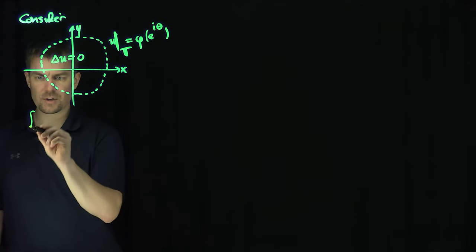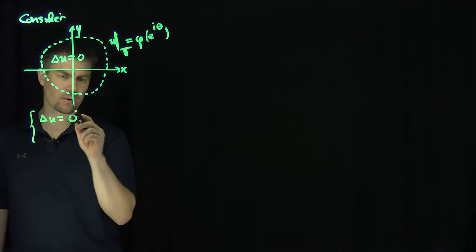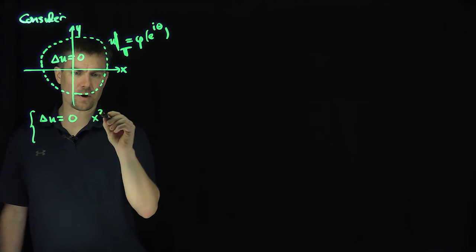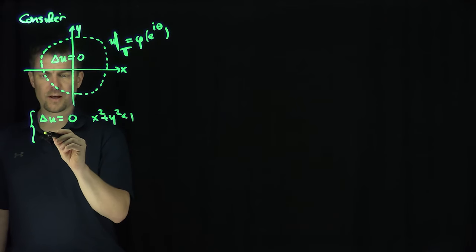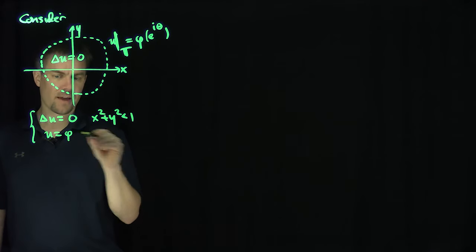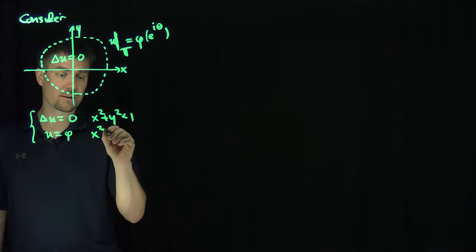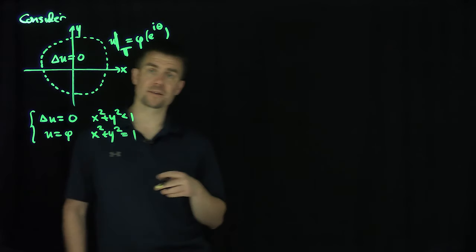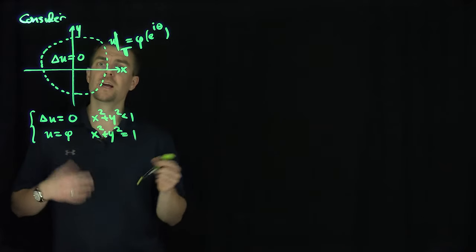Our problem is: Laplacian of u equals 0 on the set x² + y² < 1, and u equals the given function phi on x² + y² = 1. So phi is a function of cosine theta and sine theta. That's the problem we want to solve.